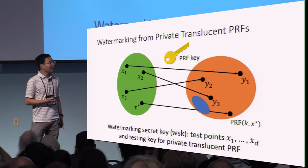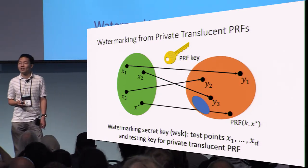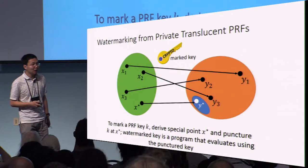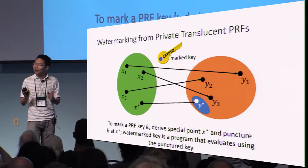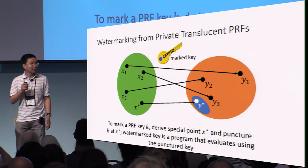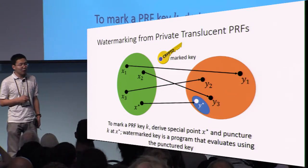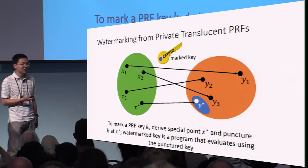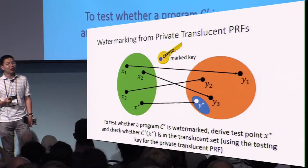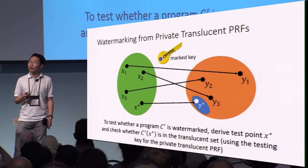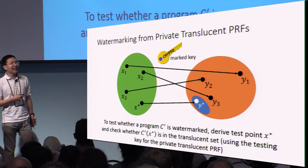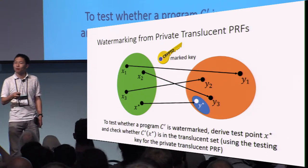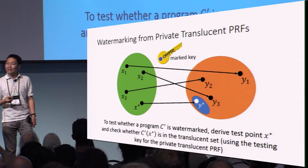The watermarking secret key consists of a sequence of test points as well as a testing key for the private translucent PRF system. To mark the PRF key, we derive the special point x* as before. We're not going to derive a special value y* anymore — all we're going to do is puncture the key at x*. The watermarked key is just an implementation of the punctured key for this private translucent PRF. To test whether a program is watermarked or not, we derive the test point x* exactly as before, then evaluate at x* and check whether we're in this special set or not. We have the property that the punctured key evaluated at the punctured point will always land in this special set.